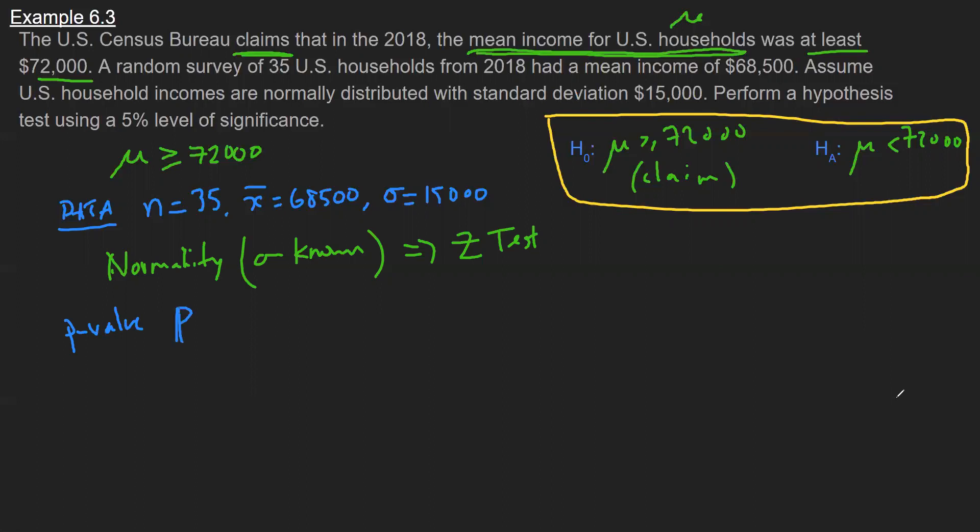And so according to lecture, the p-value here is the probability that our sampling distribution, so that's capital X bar, is at most what our data says. So our data is 68500. I'm going to pause here and highlight that this direction going less than is a result of our H_A. This direction right here is because H_A is using the less than sign. Had H_A used the greater than sign, then I would want the area to the right of 68500.